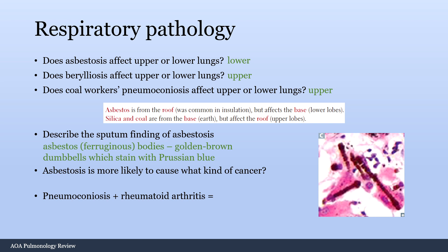Asbestosis is more likely to cause lung cancer than mesothelioma — lung cancer is way more common. Mesothelioma is the cancer of the pleura, and asbestosis is associated with it, but it's much more common to cause lung cancer. If you have a coal worker with pneumoconiosis who now has swelling in their joints — that is Caplan syndrome, an actual constellation of findings that can occur.